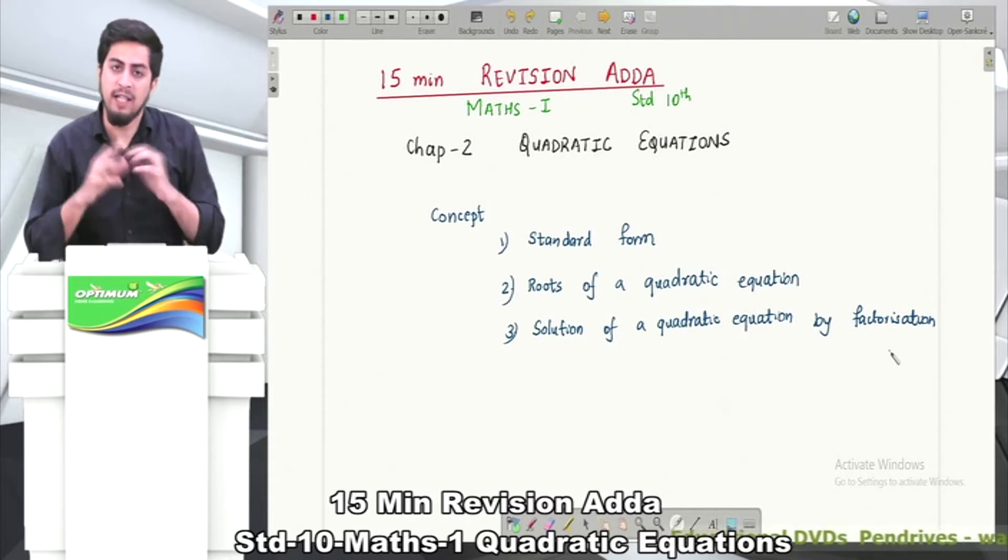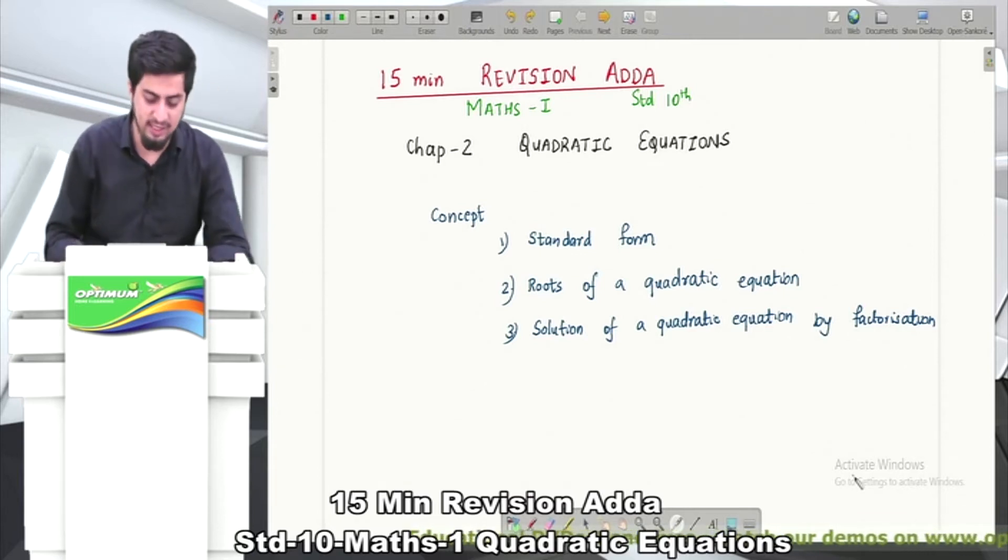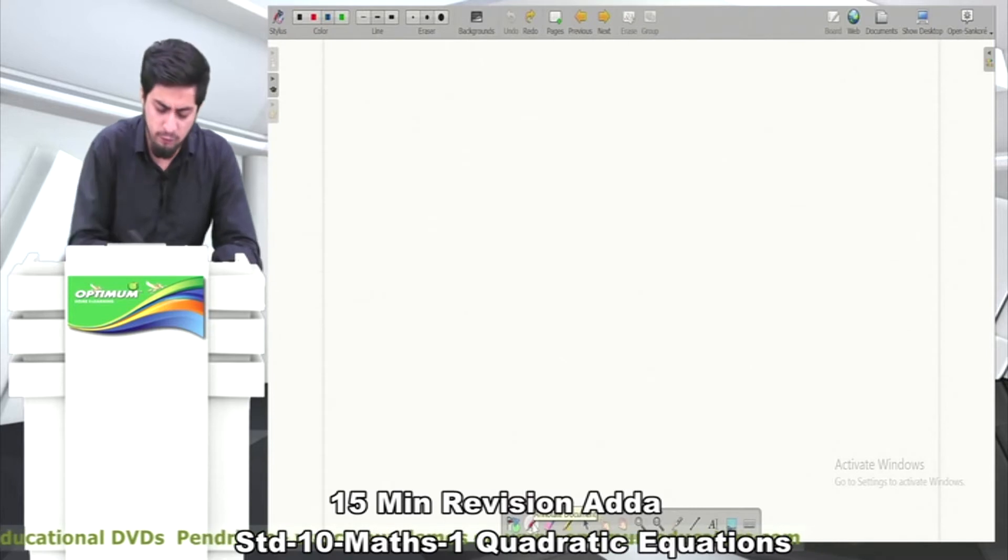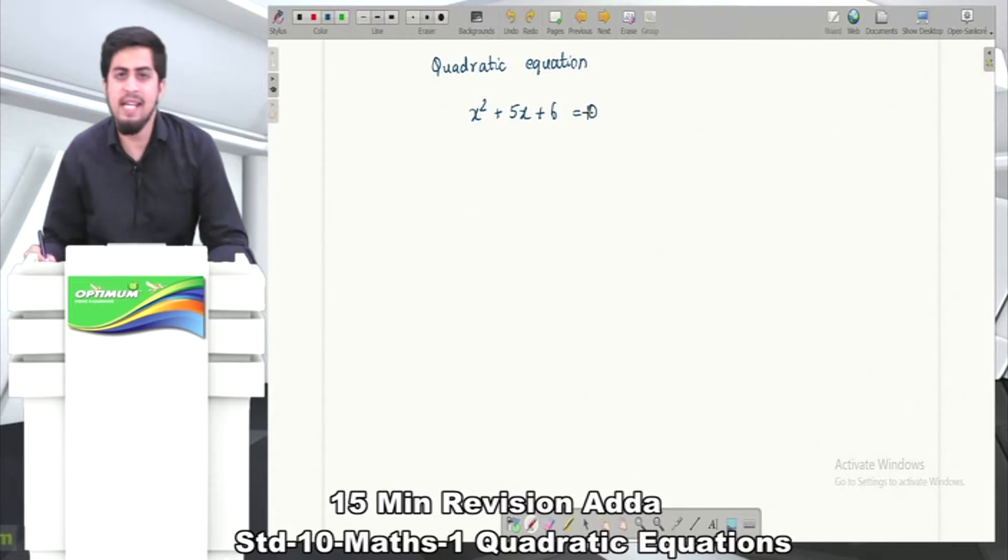Starting our first concept - we need to study what is the standard form, or first of all, what is a quadratic equation. I'll give you an example: x² + 5x + 6 = 0. This is an example of a quadratic equation.